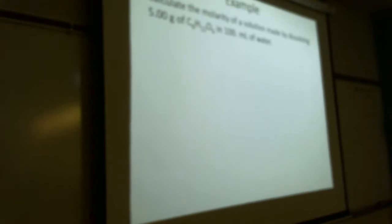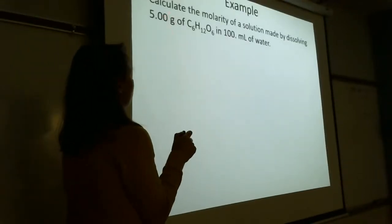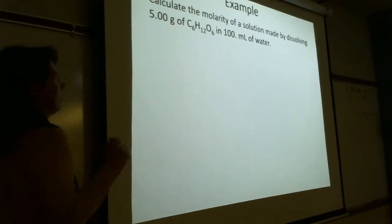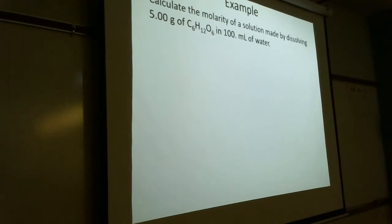Let's do this one together: calculate the molarity of a solution made by dissolving 5 grams of this sugar in 100 milliliters of water. Is it just 5 divided by 100? No, because that would give units of grams per milliliter. I don't want grams per milliliter — I want moles per liter. So what do I have to do with the 5 grams? I have to convert to moles.